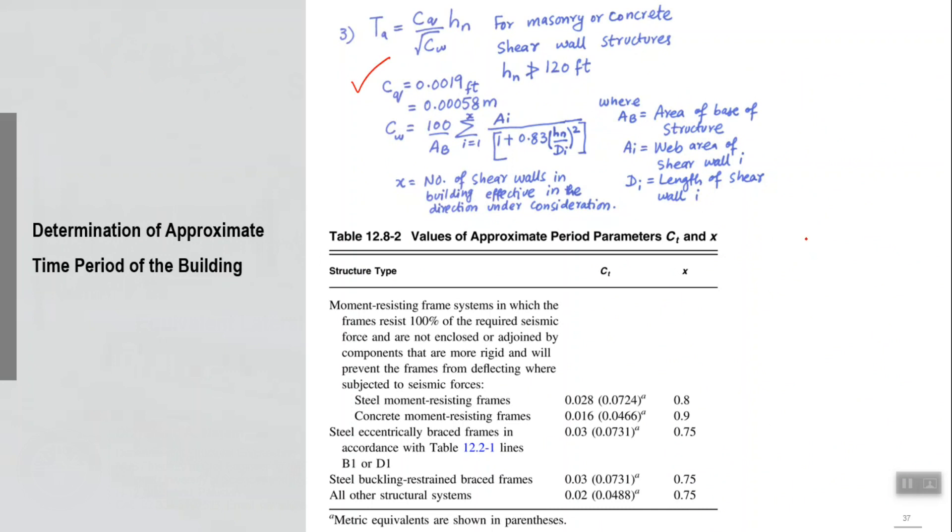Just check that for calculating the approximate time period, this is the table for that ct factor and x factor. If you have steel moment resisting frame, concrete moment resisting frame, steel eccentrically braced frame, and then finally for any other structure, these values can be used as ct and x.